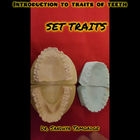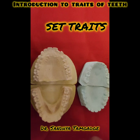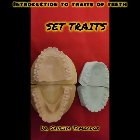Set traits — the word 'set' refers to the fact that we have two sets of teeth in our lifetime. The first is the deciduous set of teeth, and the second is the permanent set of teeth that replaces them. If we differentiate any particular tooth between its deciduous and permanent forms, that is called a set trait.